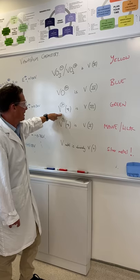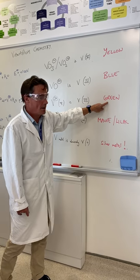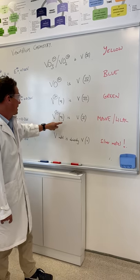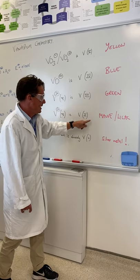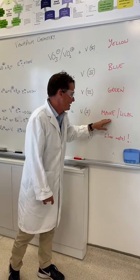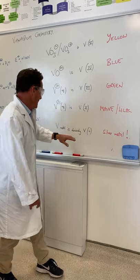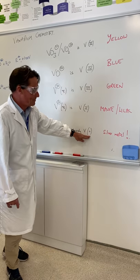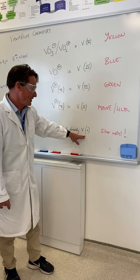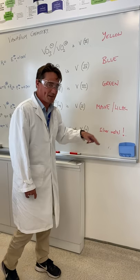Vanadium's hexa-aqua ion is green, and that's vanadium +3. And then vanadium 2+ hexa-aqua ion again is going to be a mauve-cum-lilac. And vanadium metal is obviously in its zero oxidation state. Well, it's zero because it's just the element, and obviously that would be a silver-grey metal if it hadn't corroded.